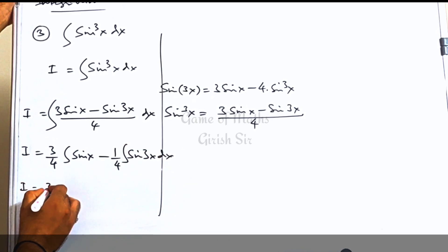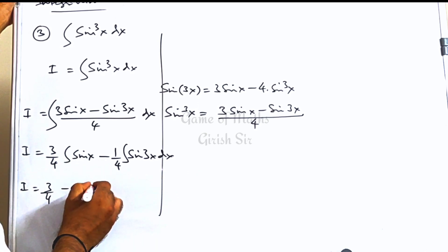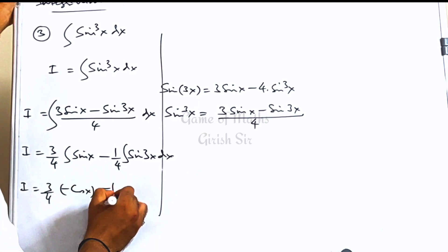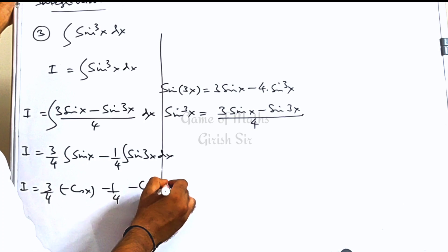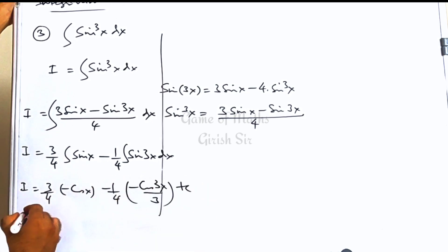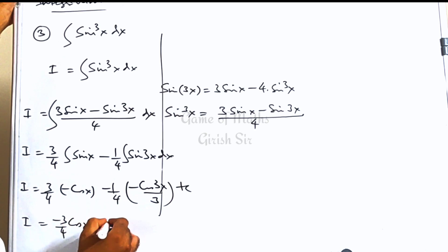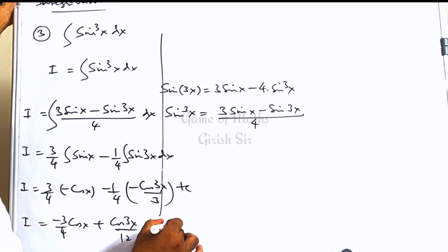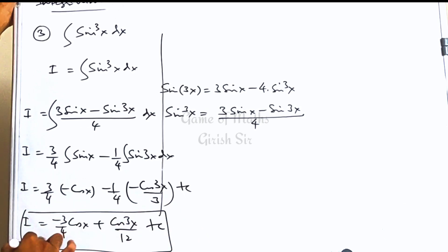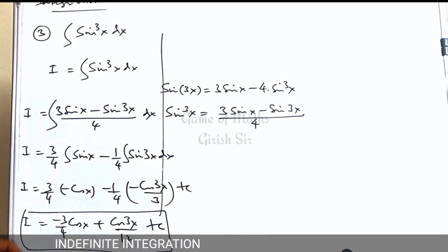Let's integrate. The integral of sin x is minus cos x, and the integral of sin 3x gives minus cos 3x divided by 3. So this is the answer to the given integral.